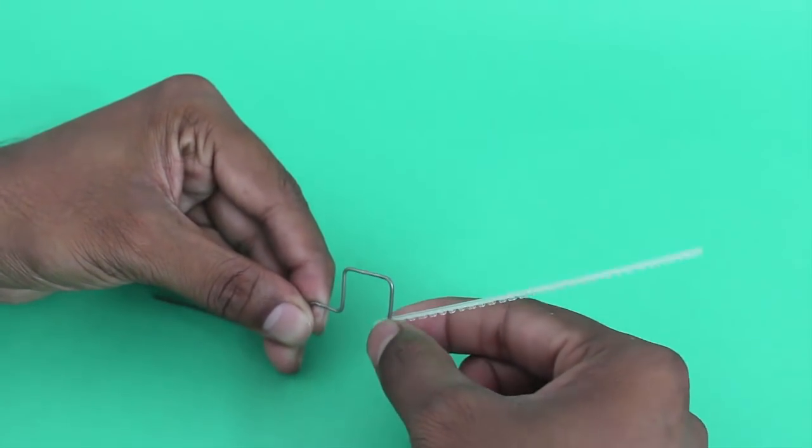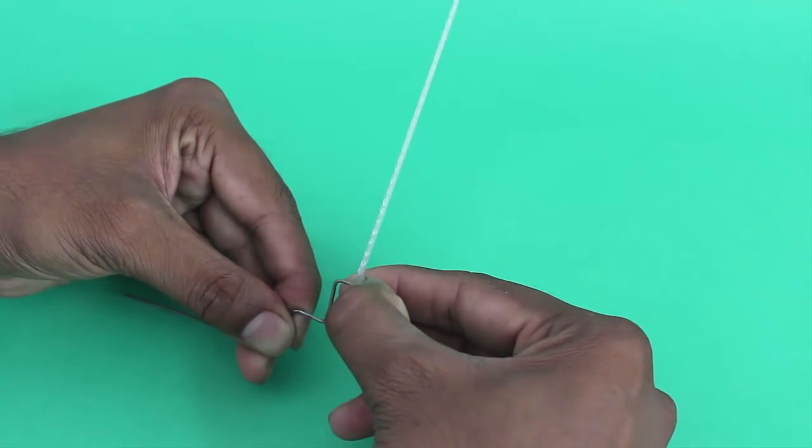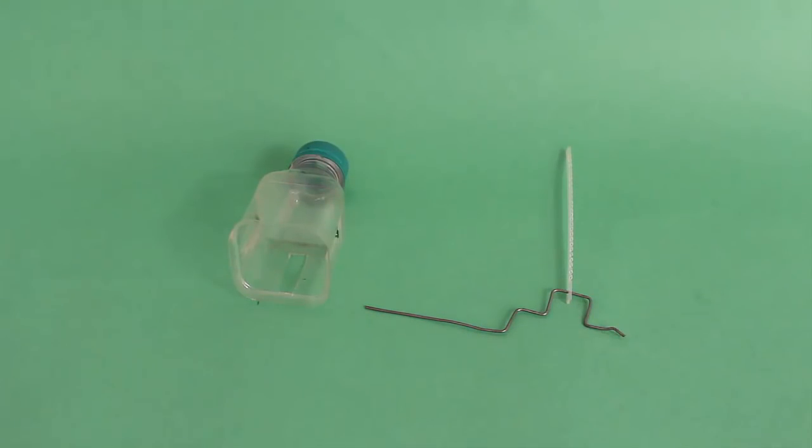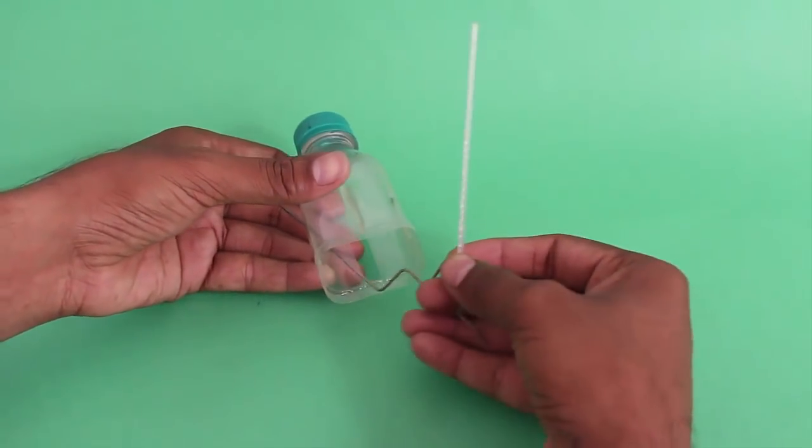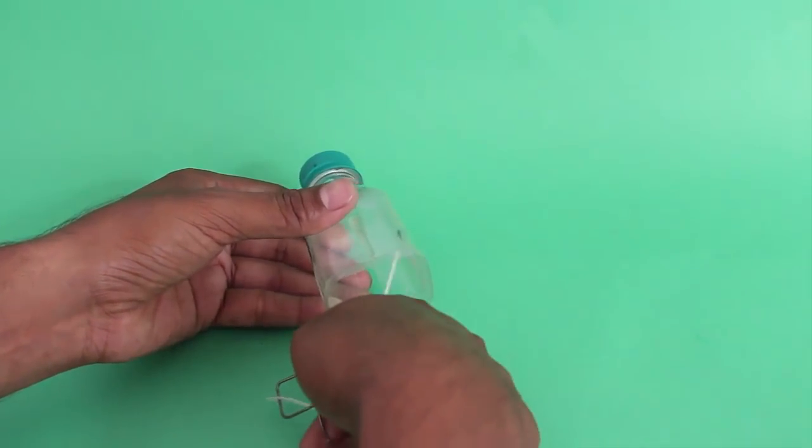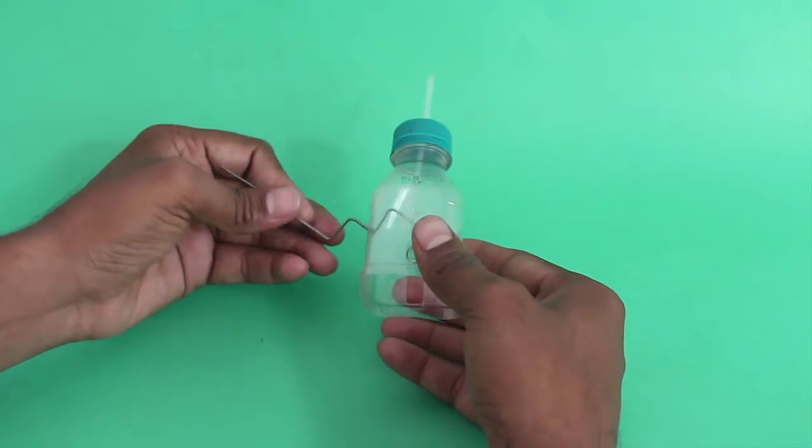Make holes on both ends of the saw. Place one hole of the saw in the crank. Now insert the crank and the saw inside the bottle holes. The other end of the saw must come out of the bottle lid.